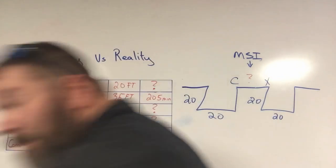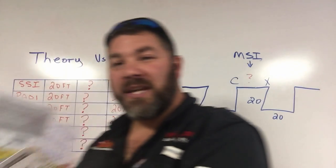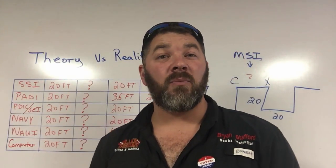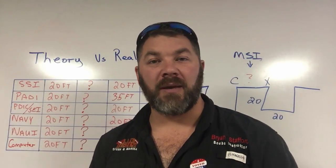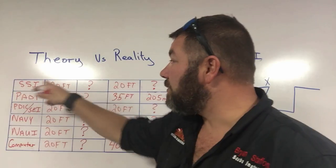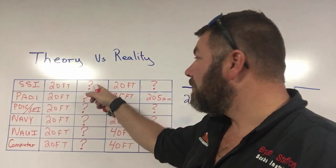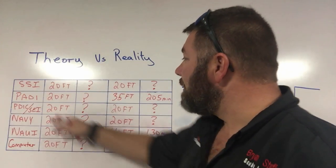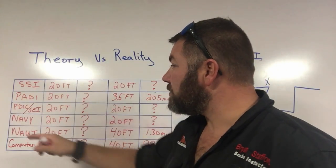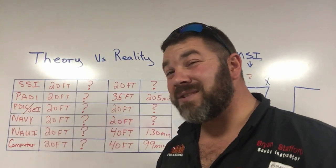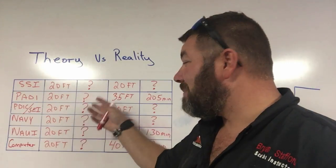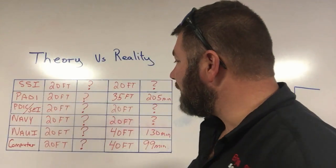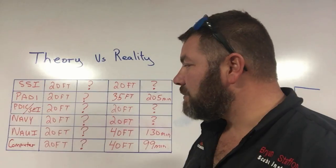We took all the tables we teach through here and did a quick comparison to see if any of them would give me a bottom time. The SSI tables do have a 20-foot rating, but it's an indefinite amount of bottom time — meaning there's no decompression limit. The PDIC-SCI tables are the same way: there's a depth listed, but no bottom time, meaning you can stay indefinitely. The Navy tables are the same way.